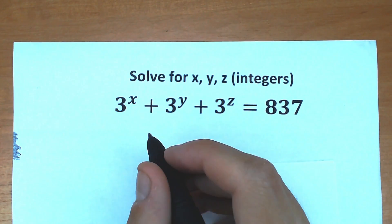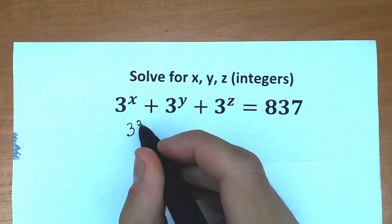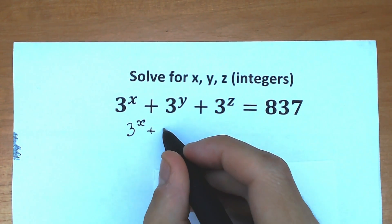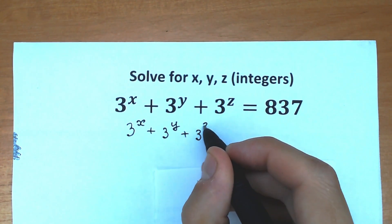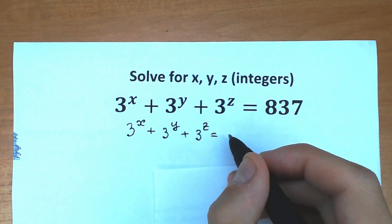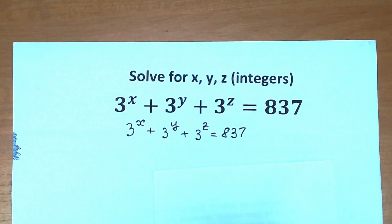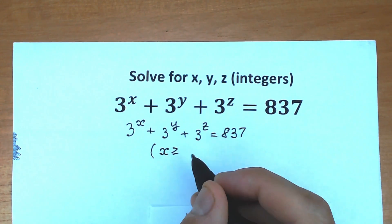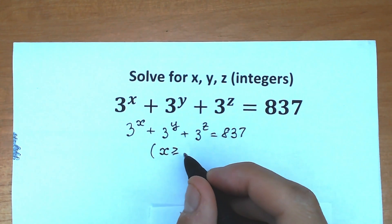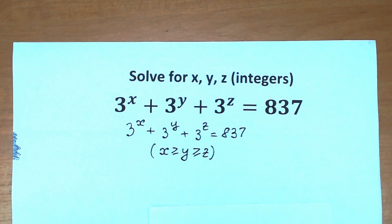First of all, let's rewrite our challenge. We have 3 to the x plus 3 to the y plus 3 to the power z equal to 837. What are we going to do next? Let's suppose that x is greater or equal than y, and y is greater or equal than z. Let's suppose that this is a correct inequality.